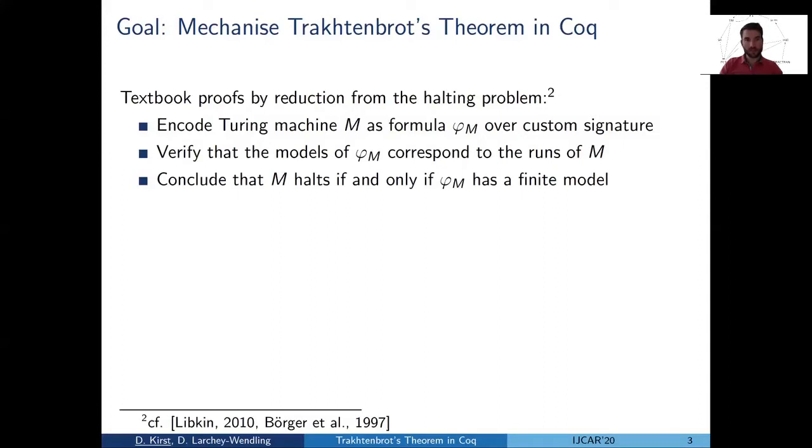Then one verifies that the models of the formula correspond to the runs of the machine. By this we can conclude that M terminates if and only if Phi M has a finite model, and hence finite satisfiability if there were a decider would induce a decider for the halting problem, which is absurd.